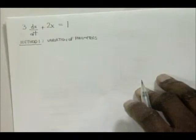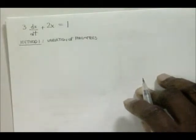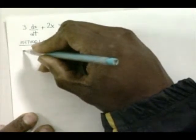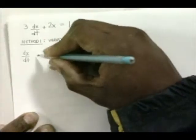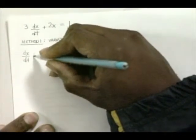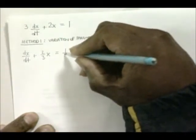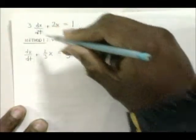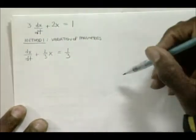To begin this technique, we need to make sure the term in front of dx/dt is 1. If we do that, we end up with dx/dt plus 2/3 x is equal to 1/3. The first step is to make sure that this first term is 1, and the way you do that is to divide each term by 3.